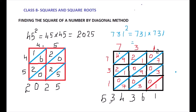The answer is 534,361. In this manner we can find the square of any 2-digit, 3-digit, or 4-digit number using the diagonal method — by drawing a square, multiplying into the boxes, adding diagonally, and getting the answer. This method is somewhat easier than the normal method of multiplication. Thank you.